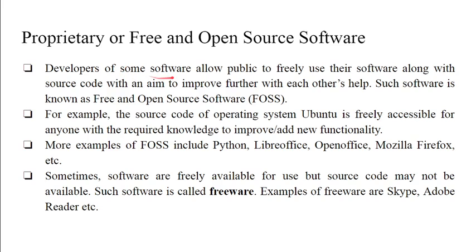Developers of some software allow the public to freely use their software along with the source code, with an aim to improve it further with others' help. Such software is known as free and open source software (FOSS). When we download such software, its source code is also available, so a user can change the source code, improve functionalities, and distribute the software to others.